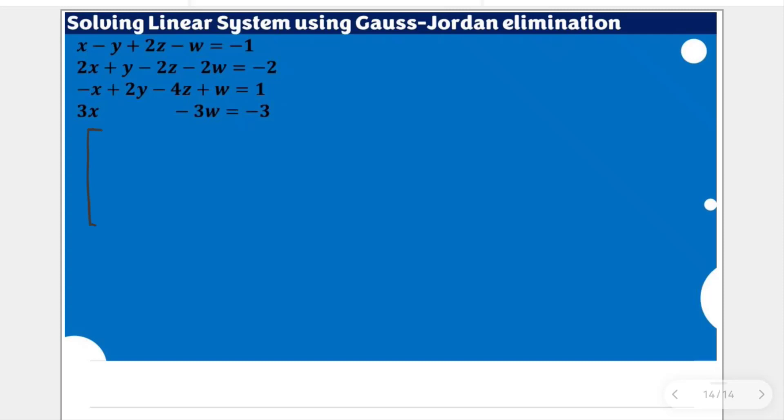So, in our previous, the row echelon form was 1, -1, 2, -1, -1, and then 0, we have 1, -2, 0, 0, and 2 rows of all 0 entries.